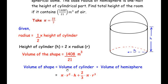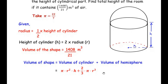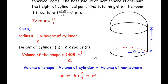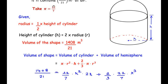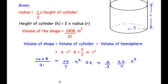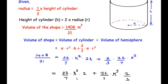The volume of the cylinder is πr²h and the volume of the hemisphere is (2/3)πr³. Substituting the given volume 1408/21 and replacing h with 2r, we write: 1408/21 = (22/7) × r² × 2r + (2/3) × (22/7) × r³. Simplifying, this becomes (22/7)r³ × 2 + (22/7)r³ × (2/3).